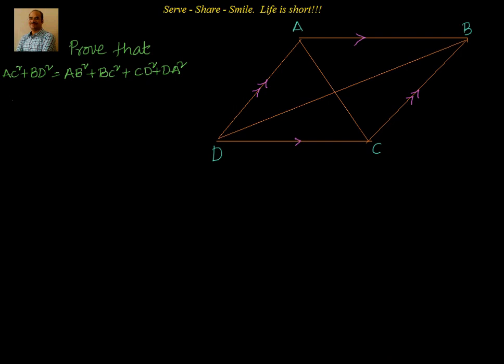Welcome back, hearty welcome to you. Let us look at this interesting example. We have been given ABCD, a parallelogram. We have to prove that the sum of squares of the diagonals of a parallelogram is equal to the sum of squares of all the sides of a parallelogram. To prove that, we have taken a parallelogram ABCD with the diagonals AC and BD respectively.